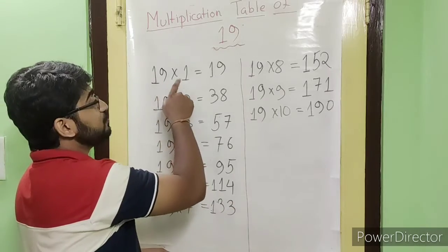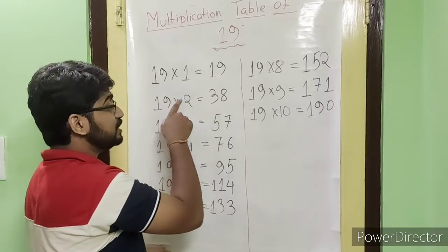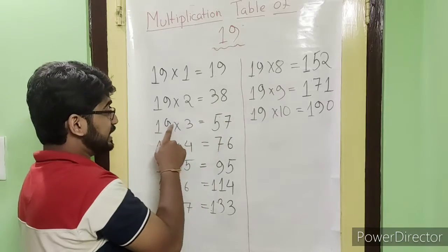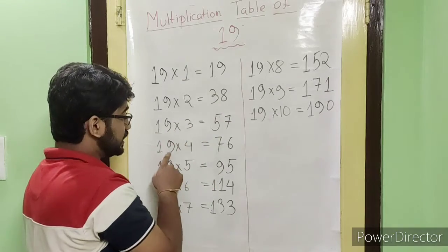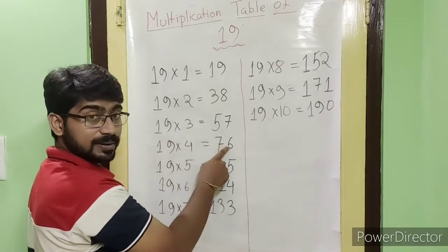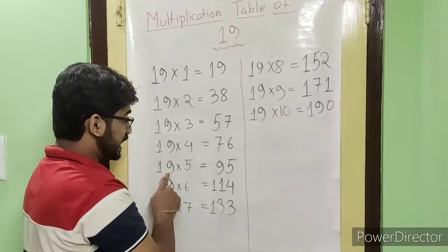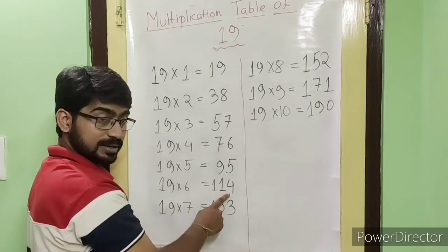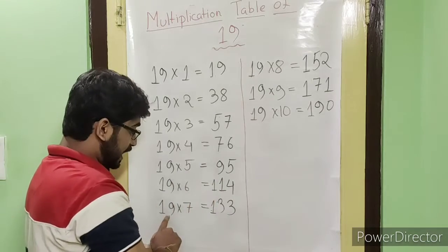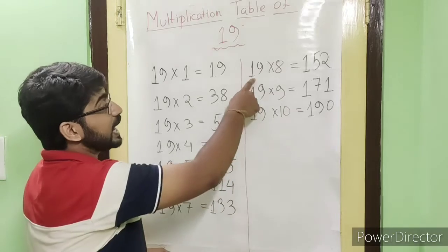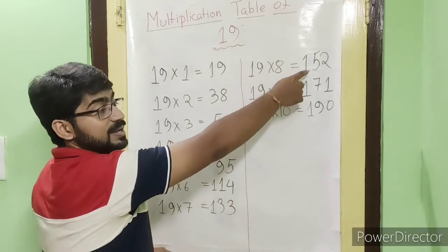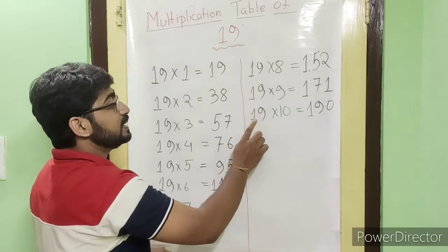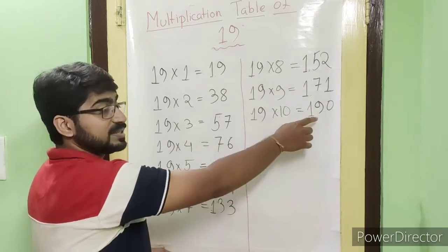19 ones are 19, 19 twos are 38, 19 threes are 57, 19 fours are 76, 19 fives are 95, 19 sixes are 114, 19 sevens are 133, 19 eights are 152, 19 nines are 171, 19 tens are 190.